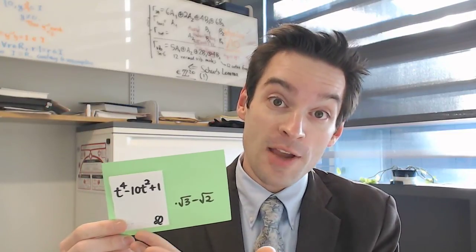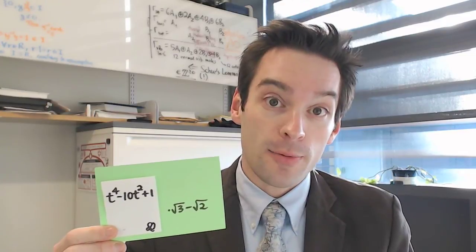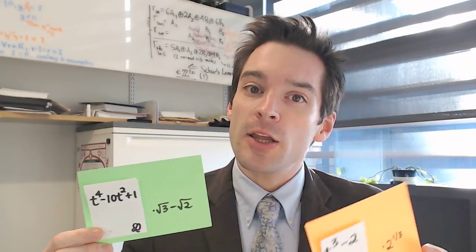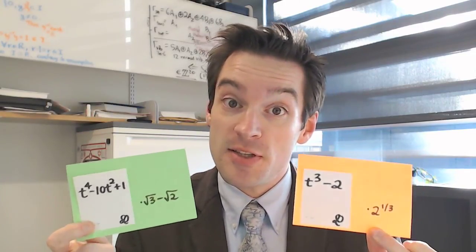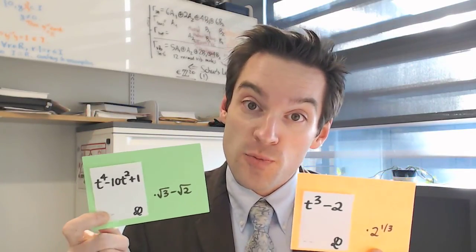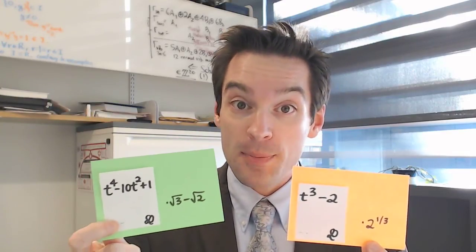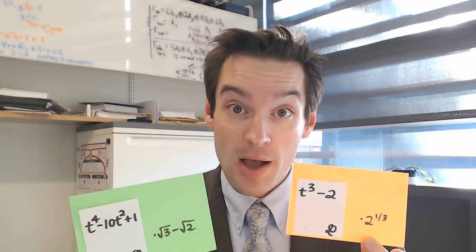Likewise, we also saw an example: t⁴ - 10t² + 1 over the rationals, which is irreducible. When we extend, we get a root, √3 - √2, of that polynomial. In this video, we want to draw a very clear distinction between the two different kinds of field extensions that this represents — according to which one of them not just contains one of the roots of that polynomial, but contains all of the roots of that polynomial.